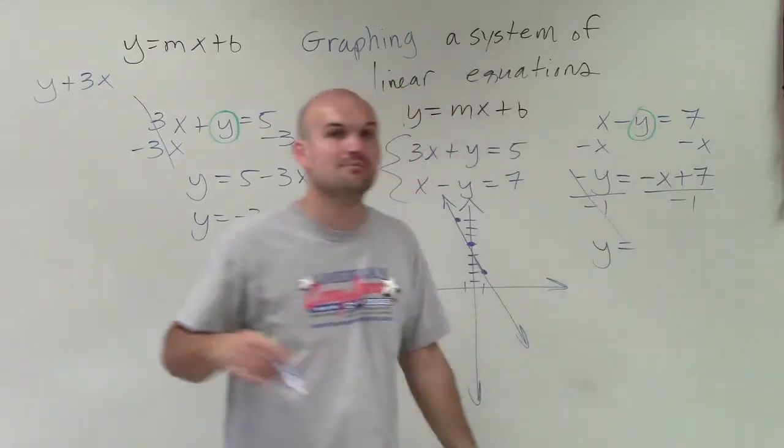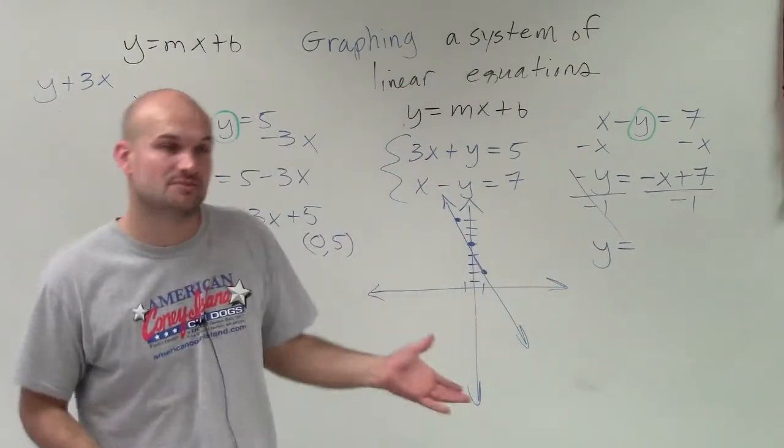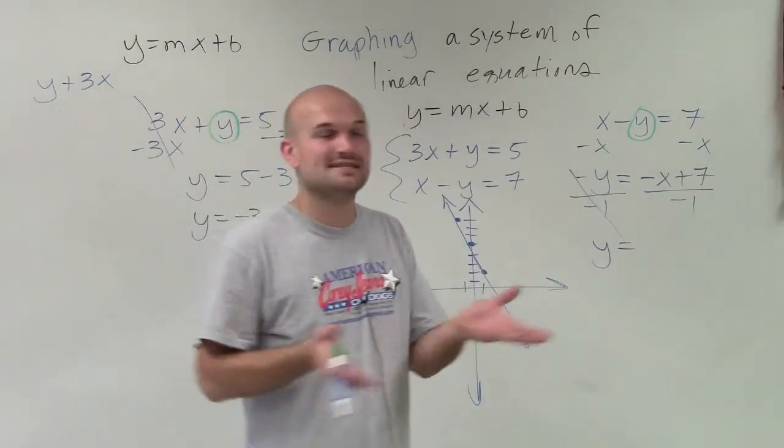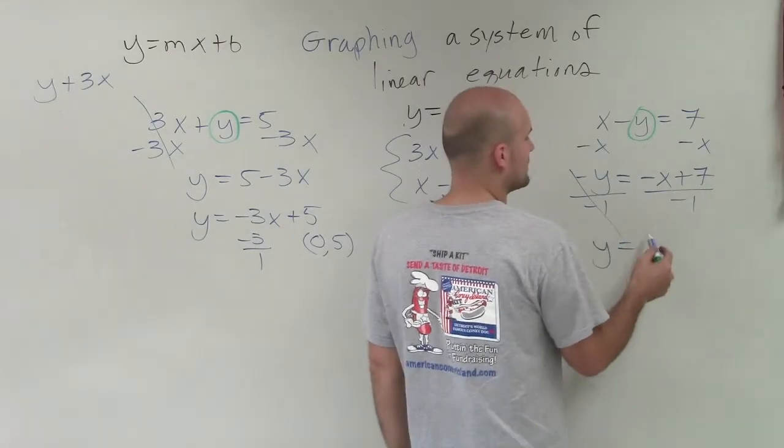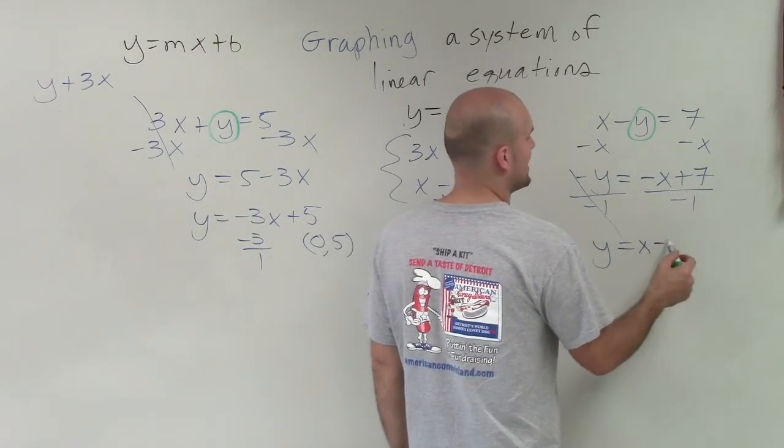Since they're separated by addition, or if they're separated by subtraction, you have to make sure you divide into both of the terms. So therefore, now I have a positive x minus 7.